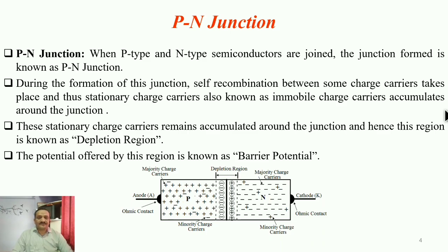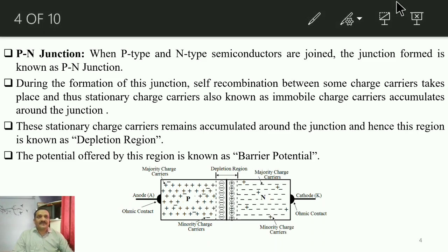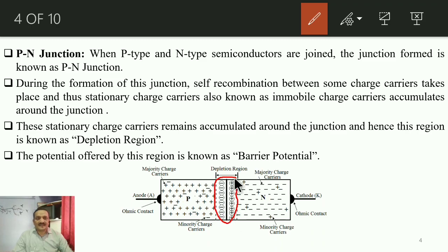Whenever P-type and N-type semiconductors are joined together, a junction is formed between them known as a PN junction. During formation of this junction, self-recombination occurs between charge carriers very close to each other at the edge of the junction. Once they recombine, stationary or immobile charge carriers get accumulated around the PN junction — the circled ones represent stationary immobile charge carriers.